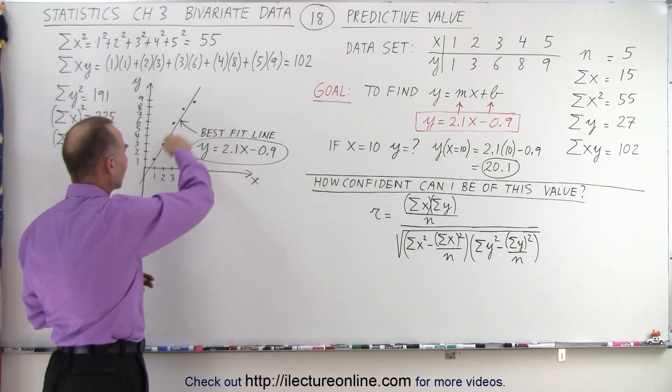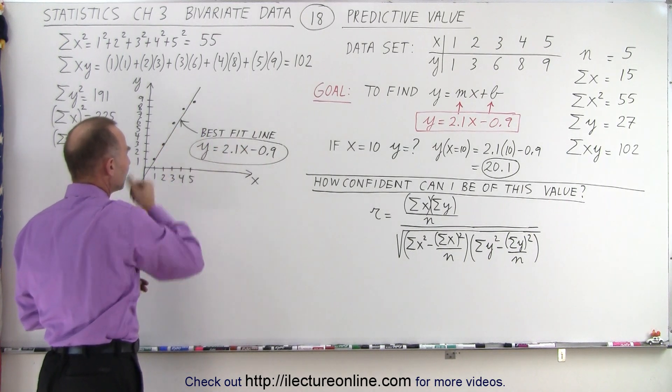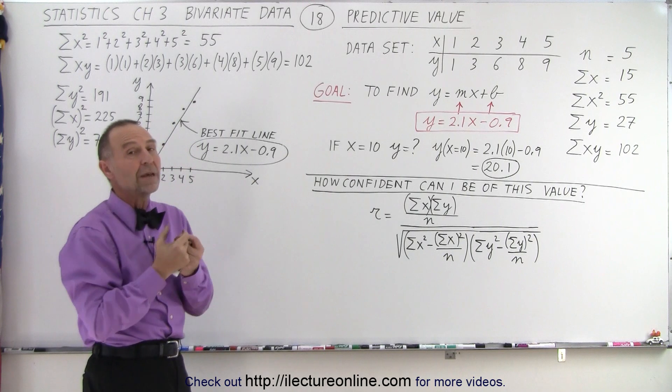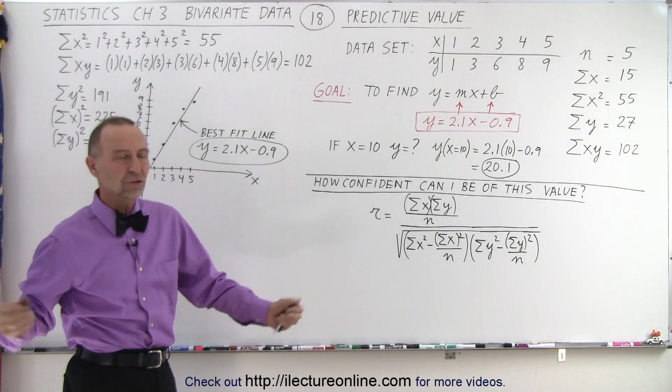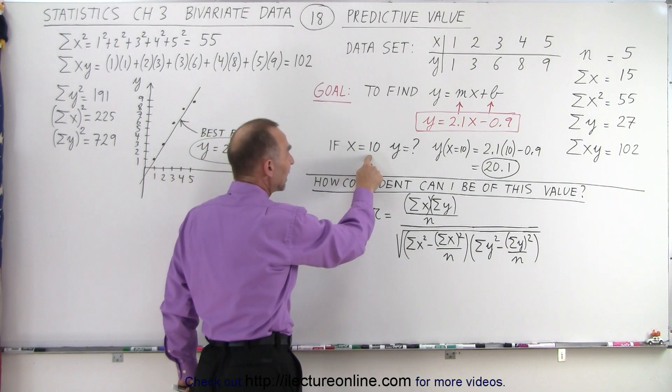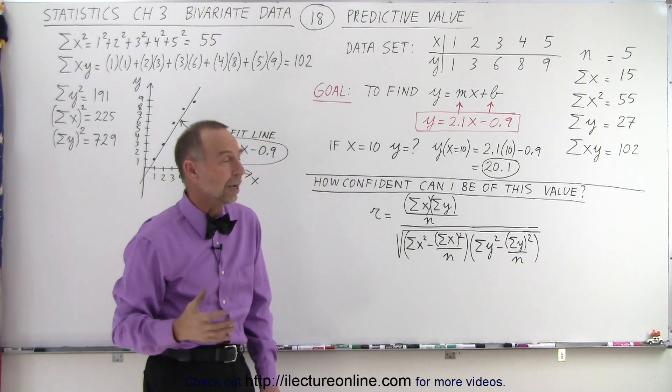Here it is. Here are the five data points on the graph and there's the best fit line. Now, how confident are we that we can use that to make predictions? And what kind of predictions should we make? Well, for example, let's say that x equals 10.